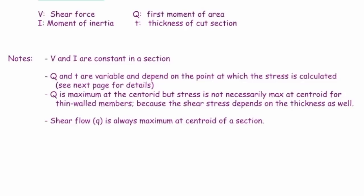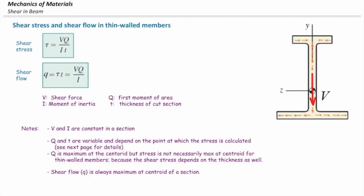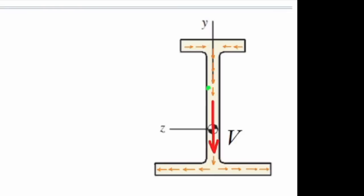The important tricky part about solving thin-walled elements is how to calculate Q and T for these shapes. For vertical elements, consider this green point here. If I want to determine Q for this point, we cut it parallel to the axis of interest, which in this case is Z, and consider the entire area above this line. Q would be simply A times D, where A is the area of that subsection and D is the distance from the centroid of the subsection to the centroid of the entire section.